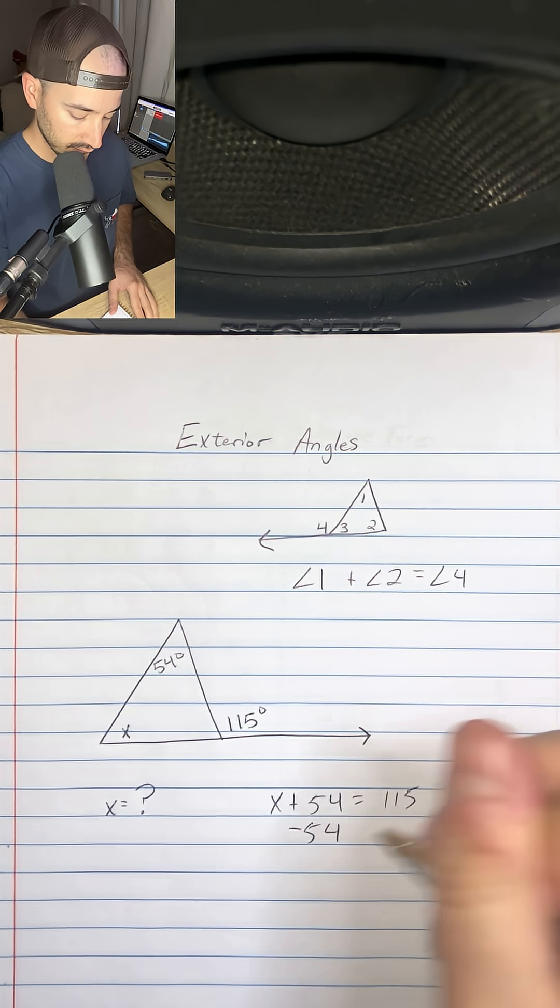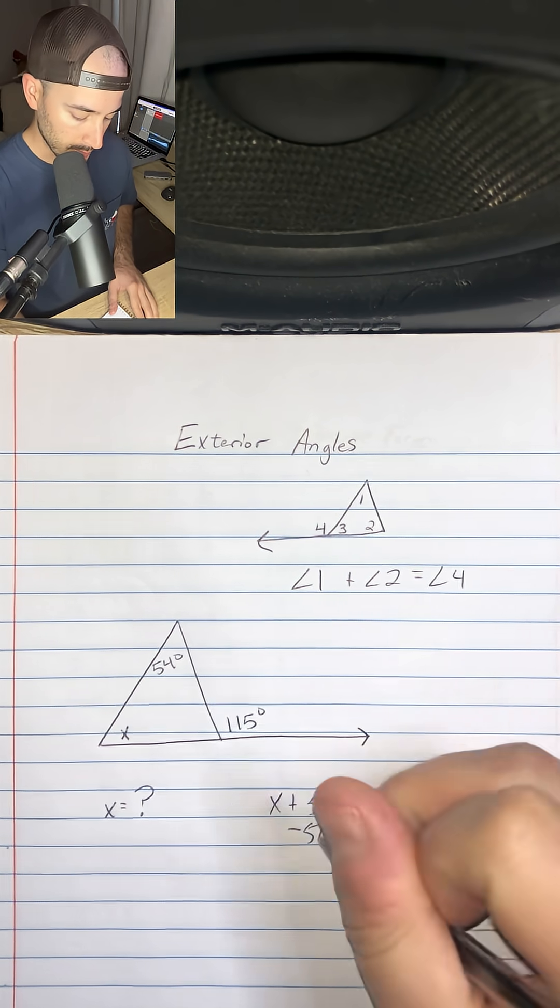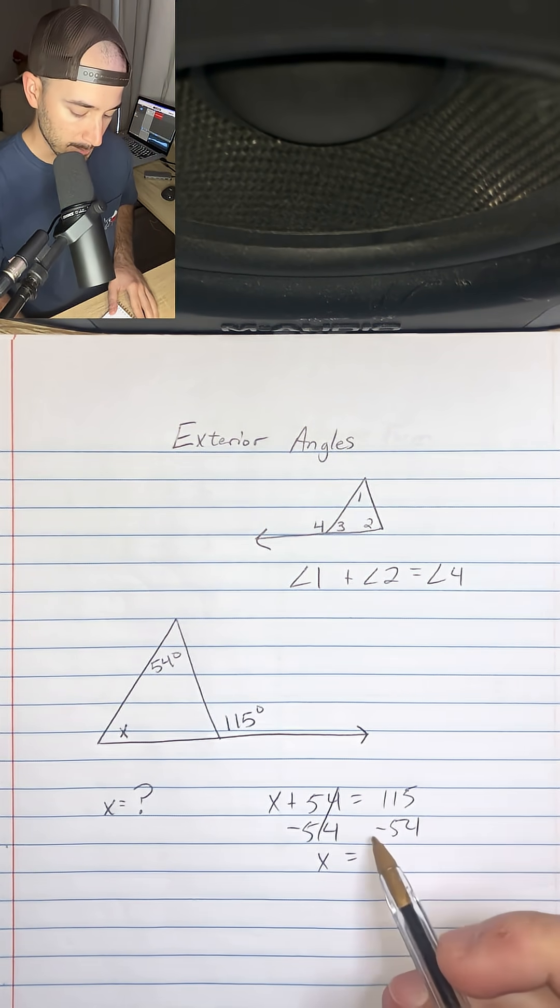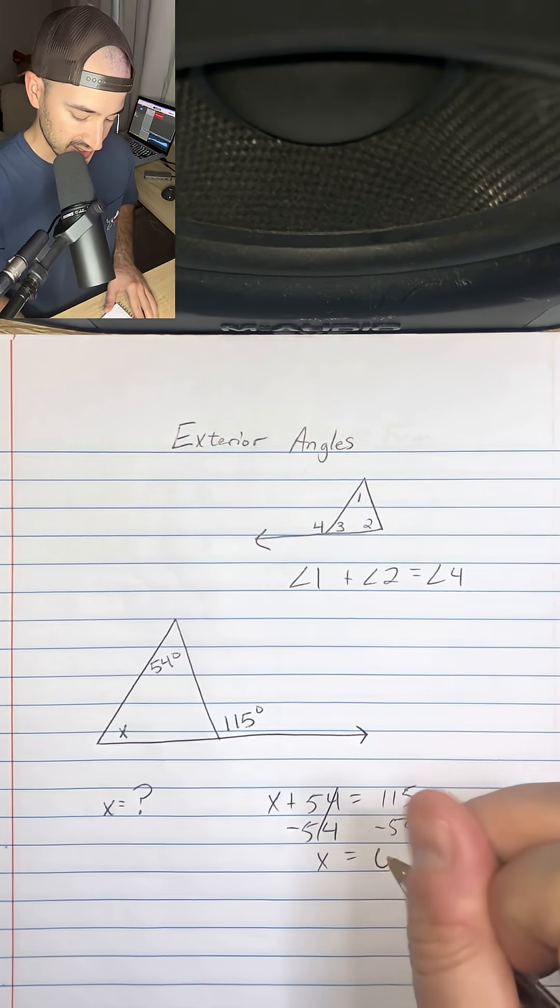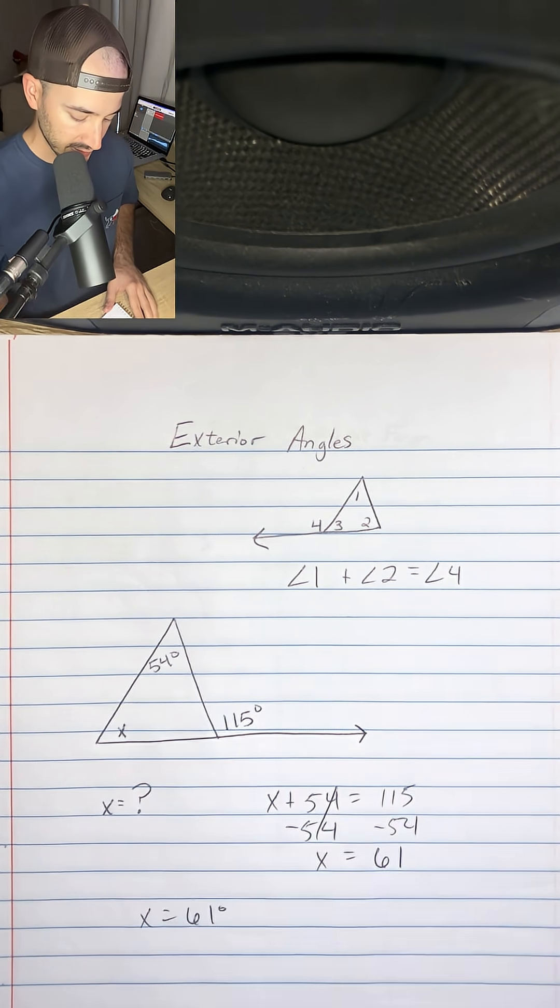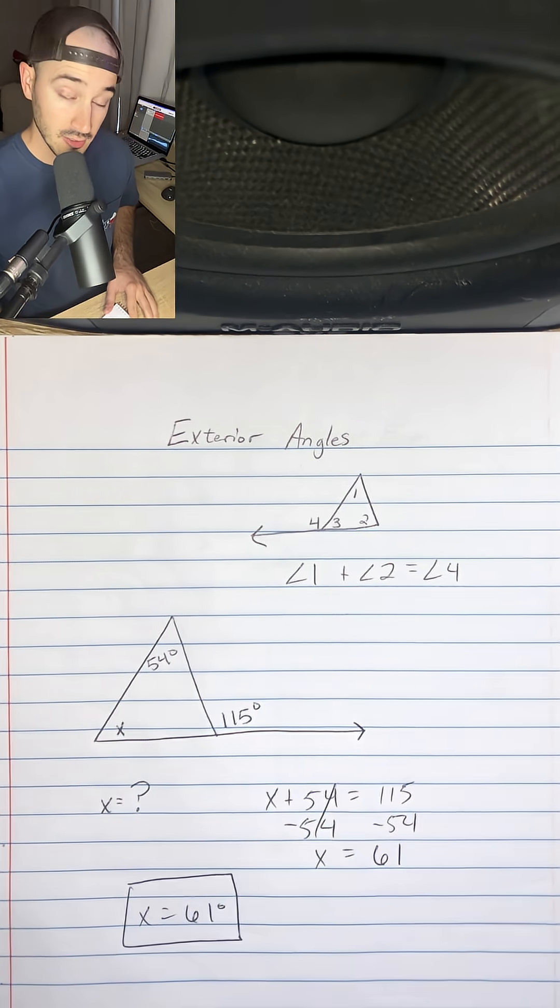So I subtract 54 from both sides to get x equals 115 minus 54, which is 61. And so x is equal to 61 degrees, and that would be our answer.